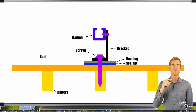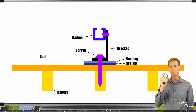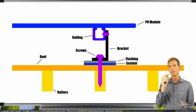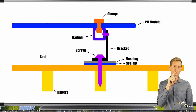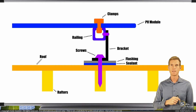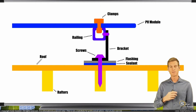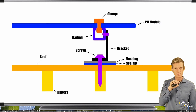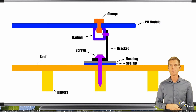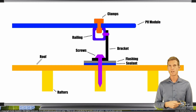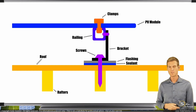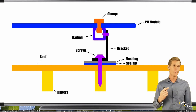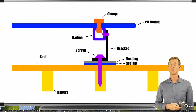Nowadays, most of the time you clamp the solar module to your railing. In the old days, we sometimes used to bolt the frames of the module straight to the railing. But nowadays it's done with clamps, which gives a couple of advantages because it's easier to orientate and place the module exactly the way you want. This is a typical setup of what a mounting system may look like for a roof mounted structure, but it really depends on which manufacturer you choose.